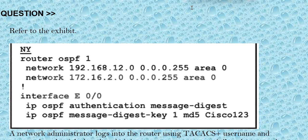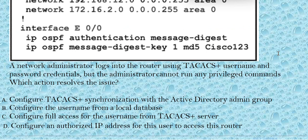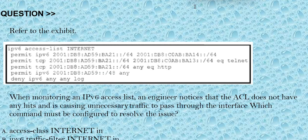A network administrator logs into the router using TACACS+ username and password credentials, but the administrator cannot run any privileged commands. Which action resolves the issue? Option A: configure a TACACS+ synchronization with the active directory group admin. Option B: configure the username from the local database. Option C: configure full access for the username from the TACACS+ server. Option D: configure an authorized IP address for this user to access this router. The correct answer is option C.